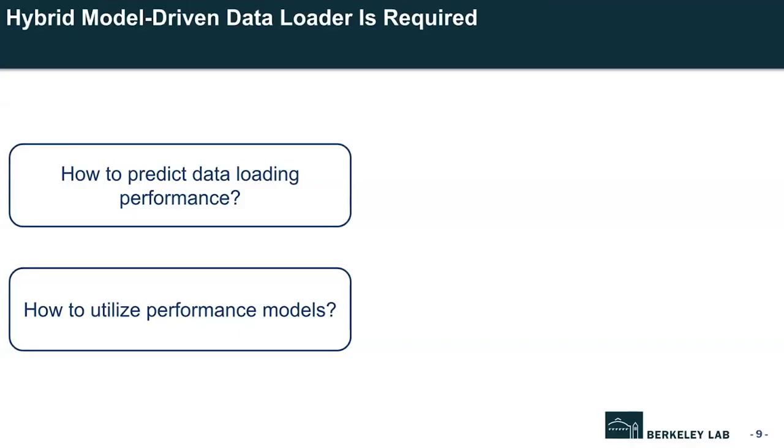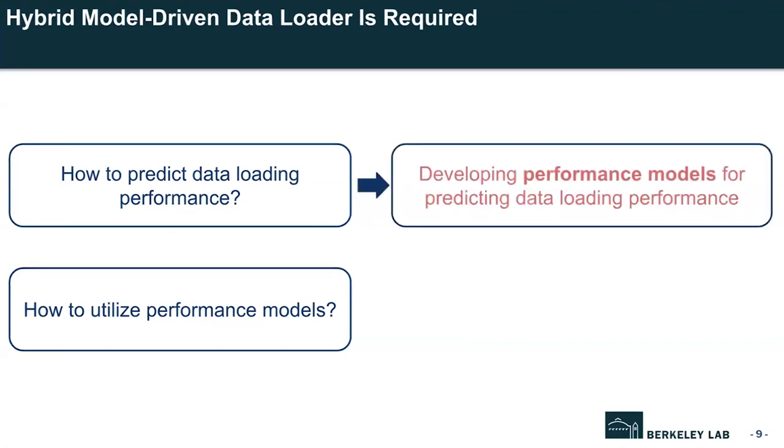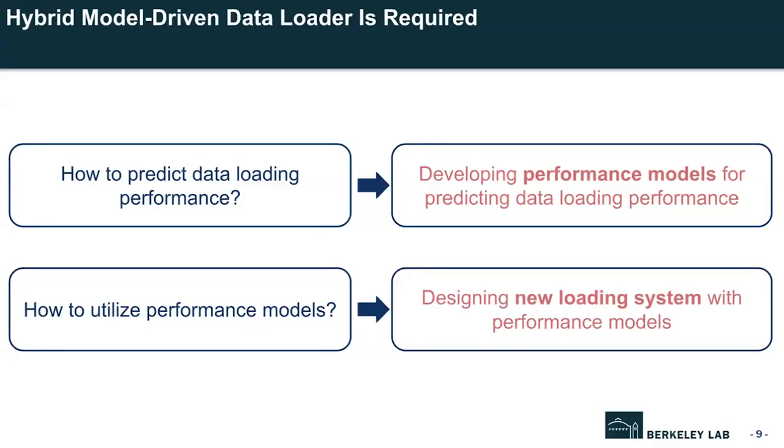In realistic cases there are various training environments — varying mini-batch sizes, number of GPUs, and network settings. To determine the most suitable communication method for a given training environment, we propose a performance model that can predict one-sided and collective communication performance. We design a new data loading system with this performance model that can select the appropriate communication method between the two options.